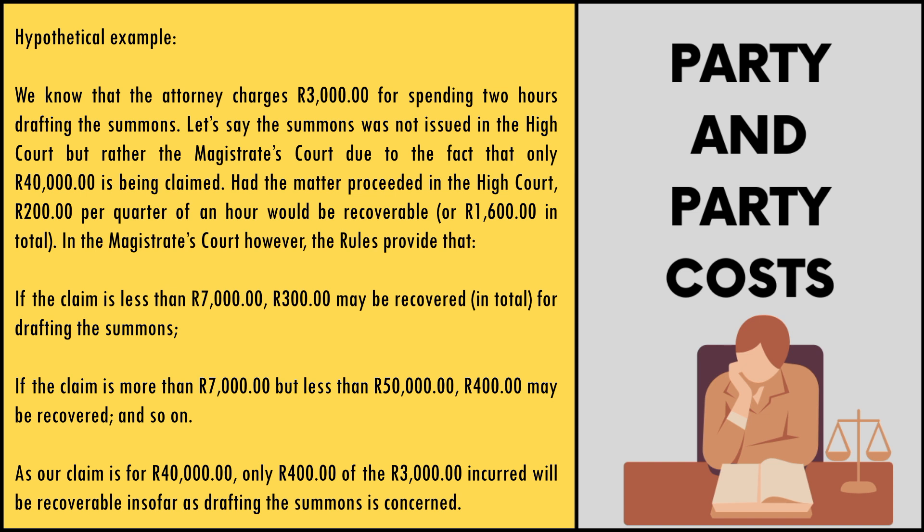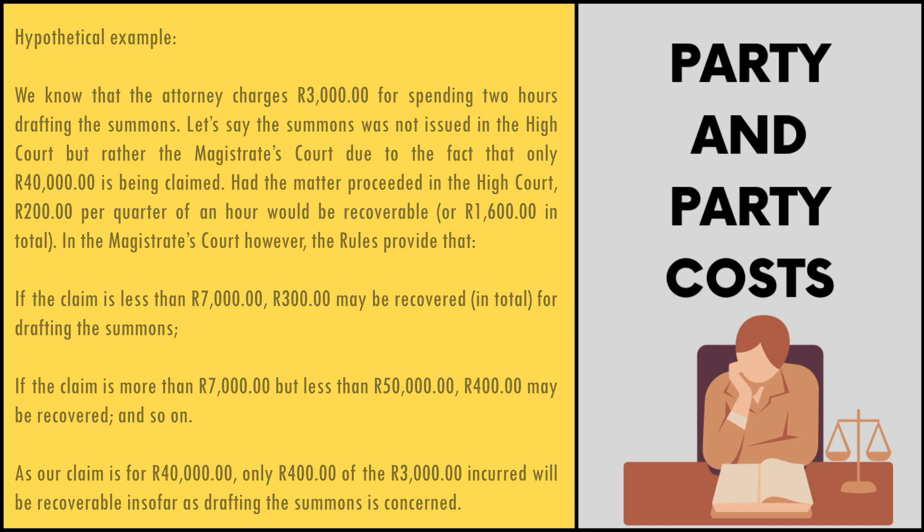We know the attorney charges R3,000 for spending two hours drafting the summons. Let's say the summons was issued in the Magistrates Court rather than the High Court because only R40,000 is being claimed. Had the matter proceeded in the High Court, R200 per quarter of an hour would be recoverable — R1,600 in total. In the Magistrates Court, however, the rules provide that if the claim is less than R7,000, R300 may be recovered in total for drafting the summons; if the claim is more than R7,000 but less than R50,000, R400 may be recovered, and so on. As our claim is for R40,000, only R400 of the R3,000 incurred will be recoverable insofar as drafting the summons is concerned.